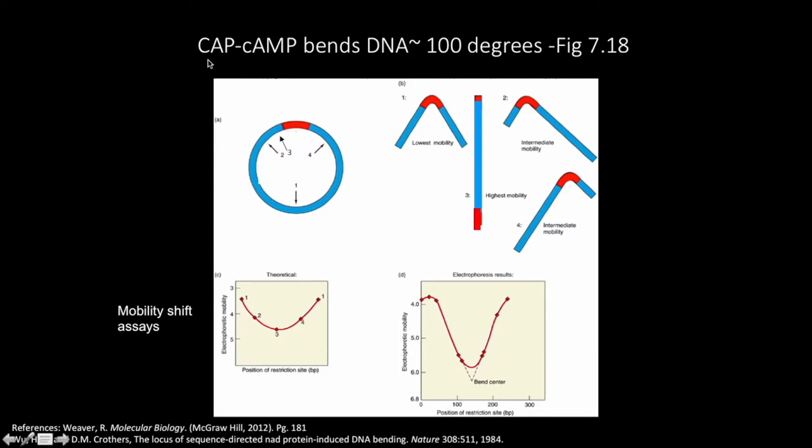In Part A of this figure, you will see a hypothetical bacterial plasmid. Prior to performing this experiment, the researchers already identified the DNA region bound by CAP through previous experiments. They inserted this region of DNA into a plasmid. This DNA region of interest is represented in red, while the plasmid DNA is represented in blue. This plasmid has four restriction sites, numbered 1 through 4.